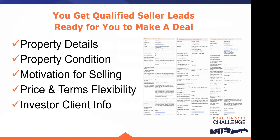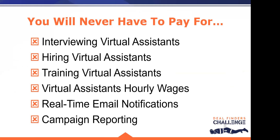The deal VAs get the seller's contact information, property details, and property condition, and ask about the motivation for selling. They also qualify the seller on flexibility on price and terms — not by asking directly, but using crafted questions like, 'If we can close all cash quickly, are you willing to accept some money at closing and the rest in about a year?' The answers tell you as an investor whether there's an opportunity for seller financing, taking over payments, or other creative financing.